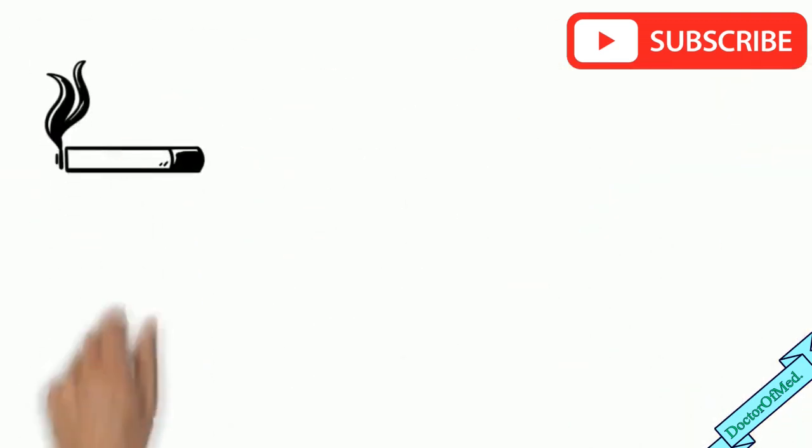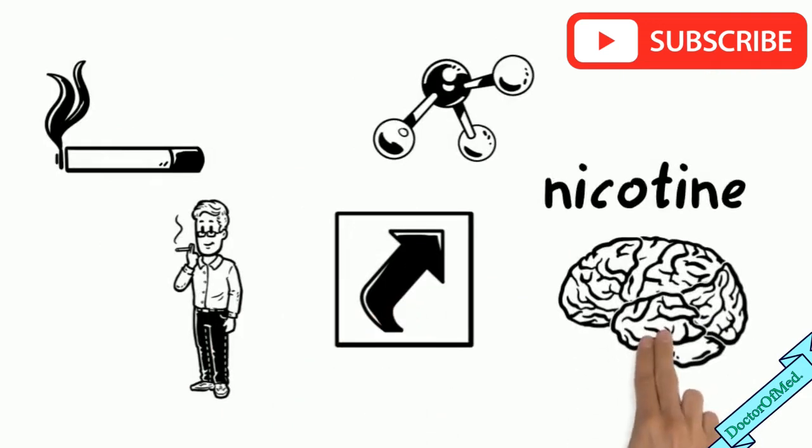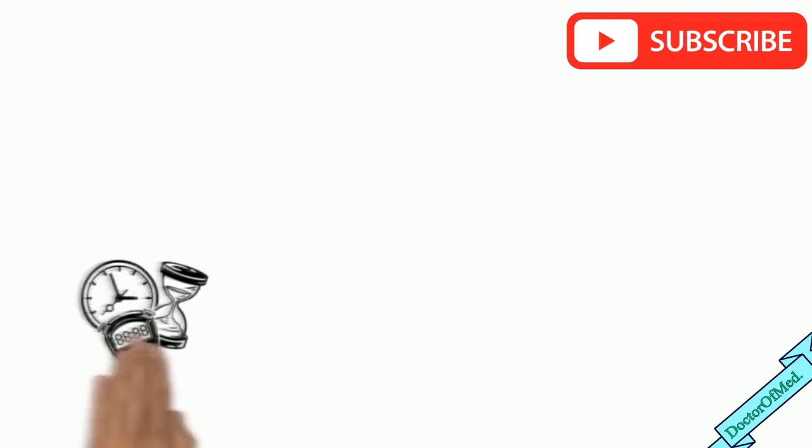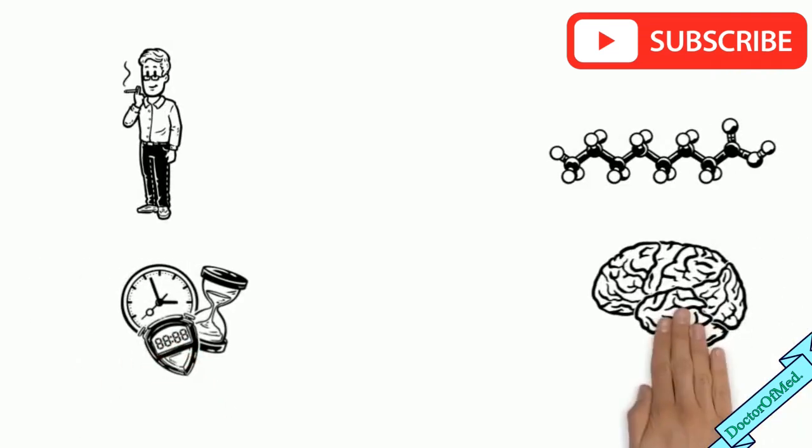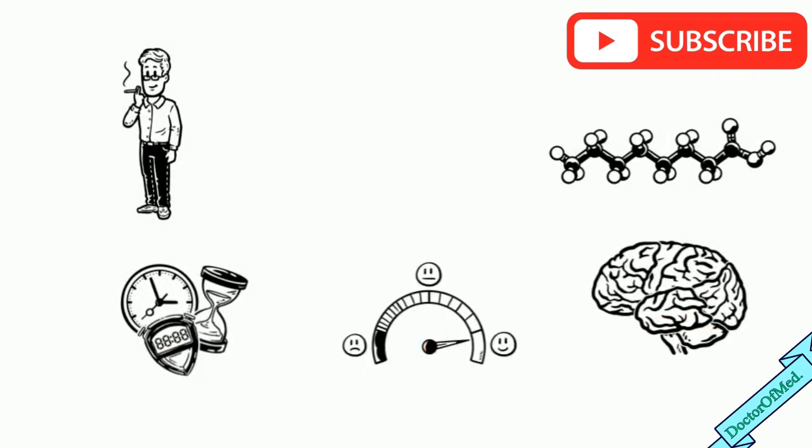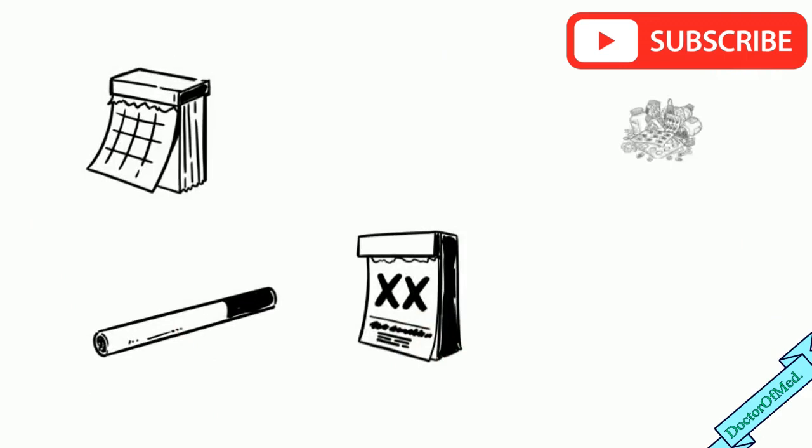The development of nicotine addiction depends on the speed and amount of nicotine absorption in the brain. Within few seconds of smoking, nicotine is absorbed into the brain, resulting in pleasurable effects. These pleasurable effects last only a few minutes. That is why smokers tend to smoke many times a day.